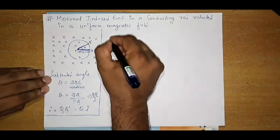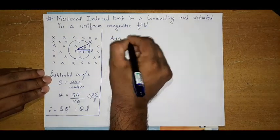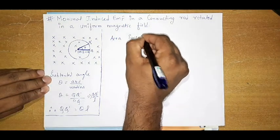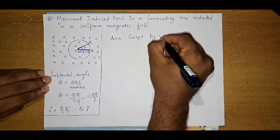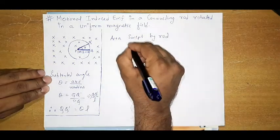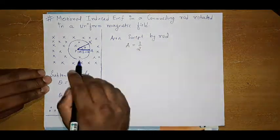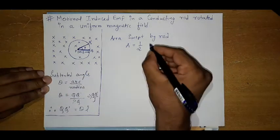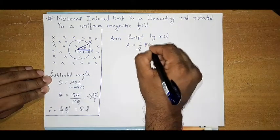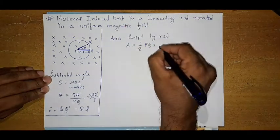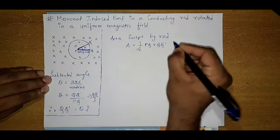So then, area swept by rod: area is equal to half into base into altitude. So here base is PQ and as altitude we take QQ dash.